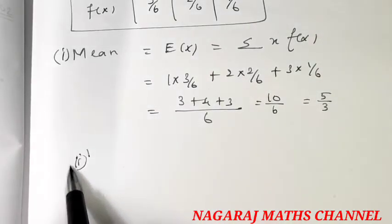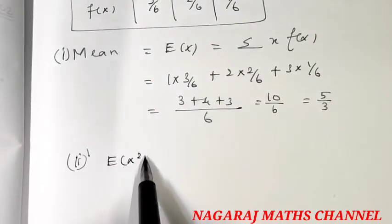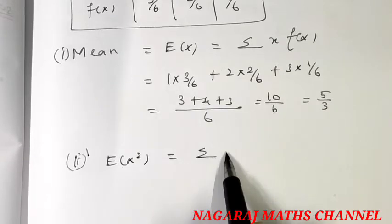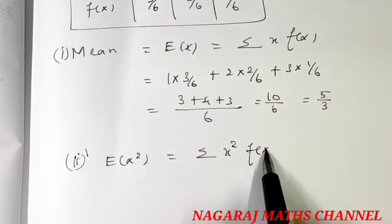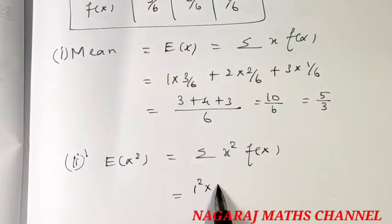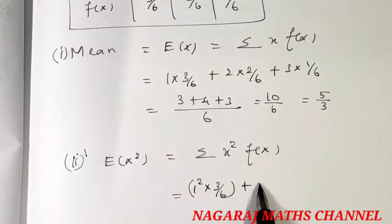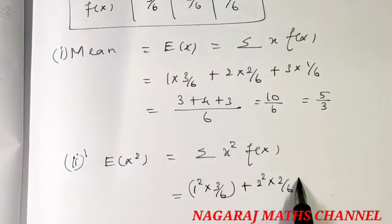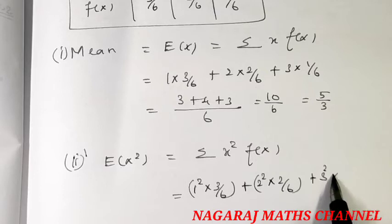Next, E of x square. E of x square is summation x square into f of x. So, 1 square into 3 by 6, plus 2 square into 2 by 6, plus 3 square into 1 by 6.